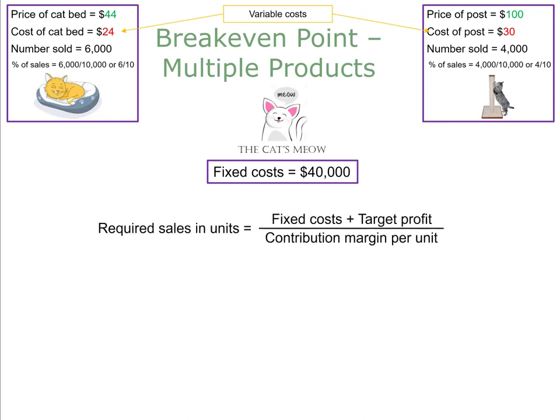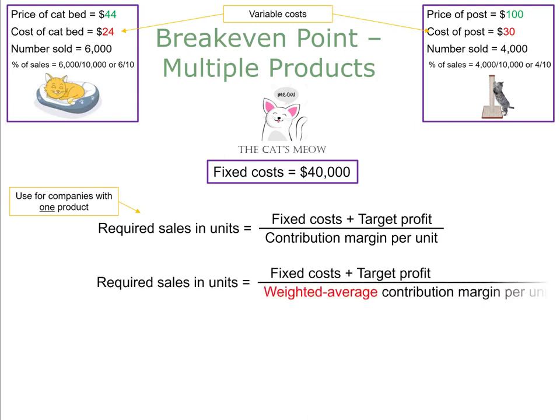Previously we used a standard formula when calculating break-even point, but that formula is used only if the company has one product. For a company with multiple products, we use a slightly different version. The only difference is in the denominator, which now uses the weighted average contribution margin per unit.